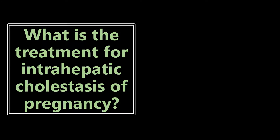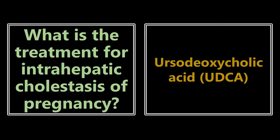What is the treatment for intrahepatic cholestasis of pregnancy? The treatment is UDCA, or ursodeoxycholic acid. It's also important to note that if patients are greater than 37 weeks gestation, delivery is also indicated due to associated risks.